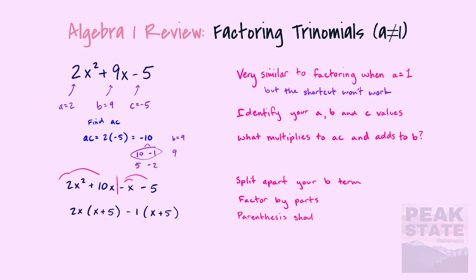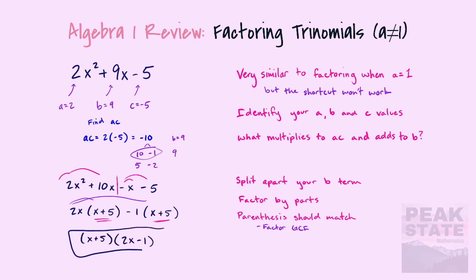In this case the common factors are 2x and negative one. We know we've done it correctly when those parentheses match. We see that x plus five is our new greatest common factor, so we pull that out of our two remaining terms, leaving us with (x + 5)(2x − 1).